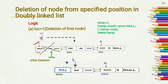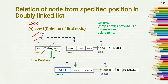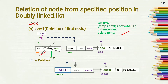Then we have to update the value of l by writing l = temp→next, which means now l contains 500 because temp→next contains 500. Now we have to delete this temporary node by writing delete temp. So now the doubly linked list contains two nodes having values 20 and 5; l points to the first node and r points to the last node.